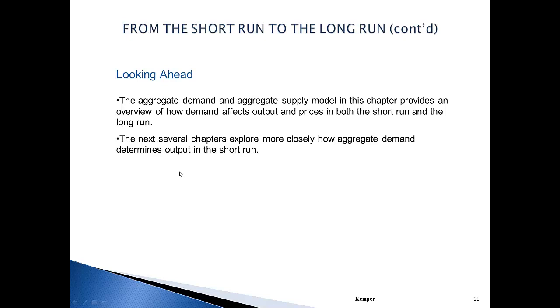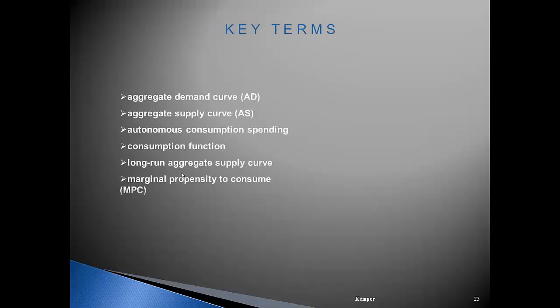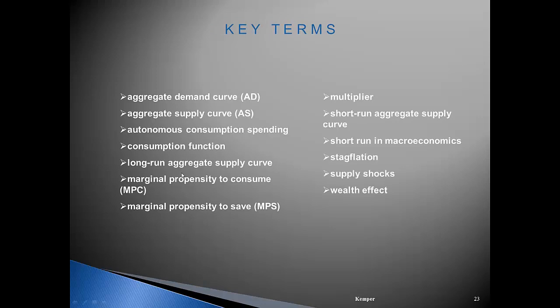The Democratic view is what we looked at more in depth today: if we decrease taxes, people spend more; if we stimulate the economy by increasing the money supply, aggregate demand rises; and increasing government spending also raises aggregate demand. As always, if you have any questions, feel free to email me at jkemper@southplainscollege.edu. You can follow me on Twitter at Mr. Kemper. Thank you and have a great day.